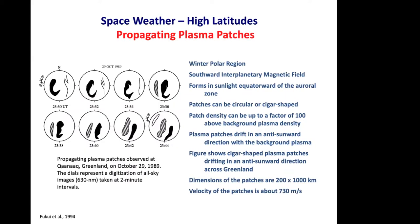The second example is propagating plasma patches. Like the tongue of ionization, they appear in a winter polar region when the IMF turns southward, forming in sunlight equatorward of the dayside cusp. Patches can be either circular or cigar-shaped, and the patch density can be up to a factor of 100 above background plasma densities. The figure shows cigar-shaped patches drifting anti-sunward across Greenland, with dimensions of 200 by 1,000 kilometers and a velocity of about 730 meters per second.